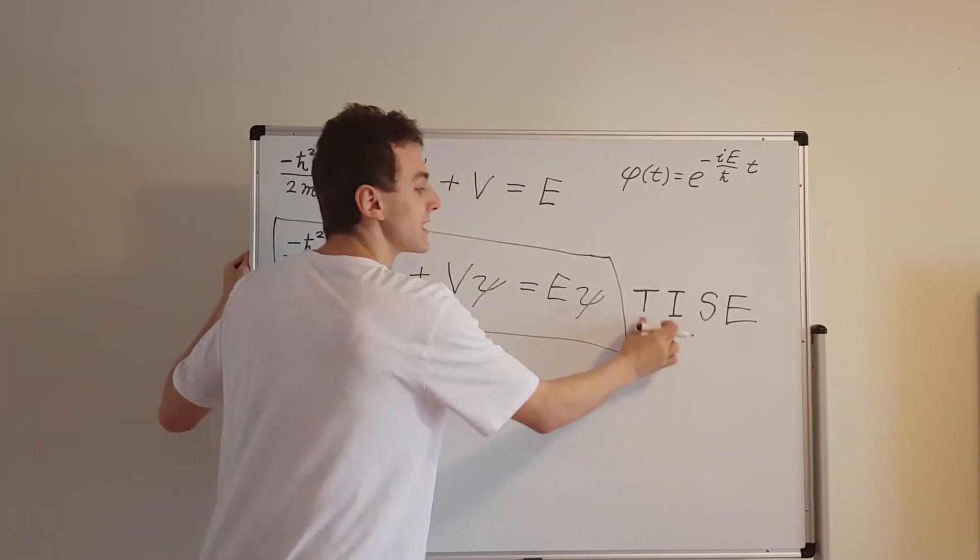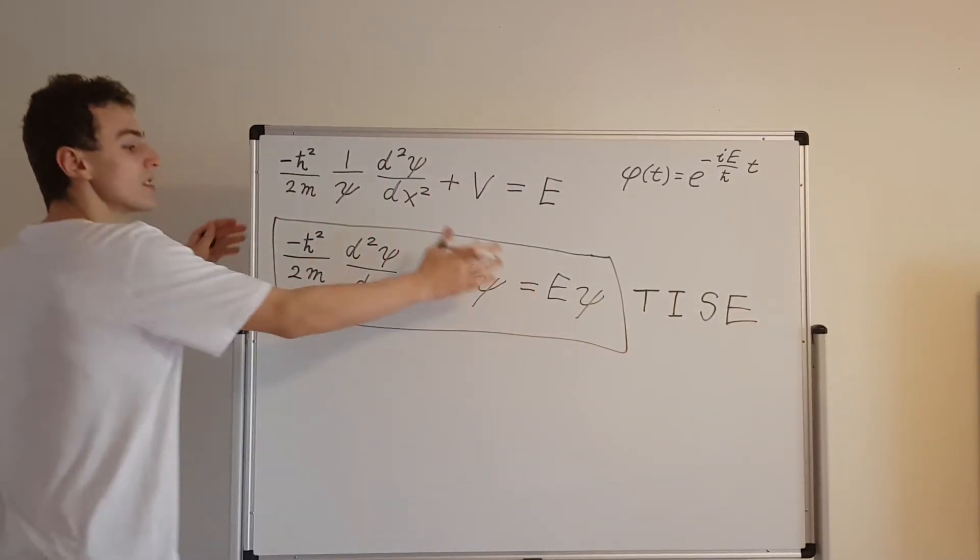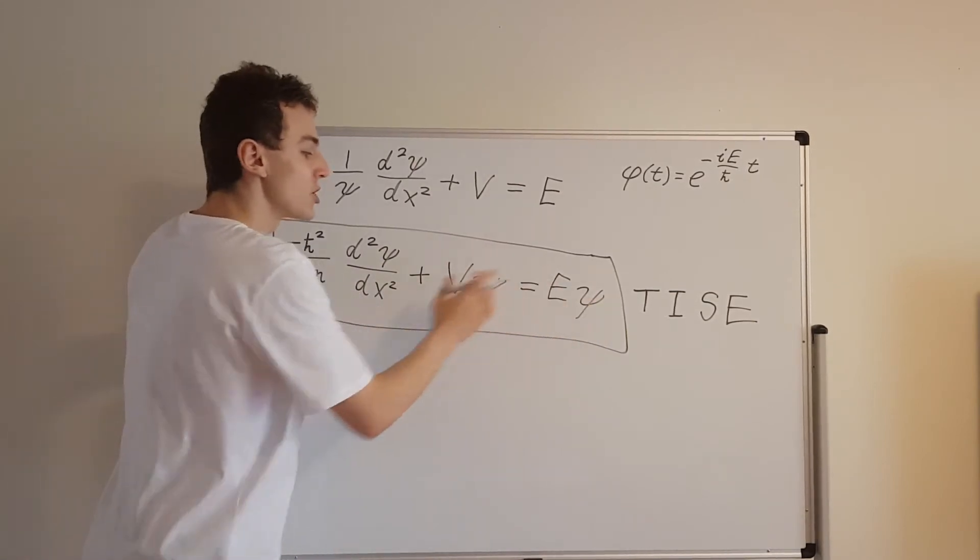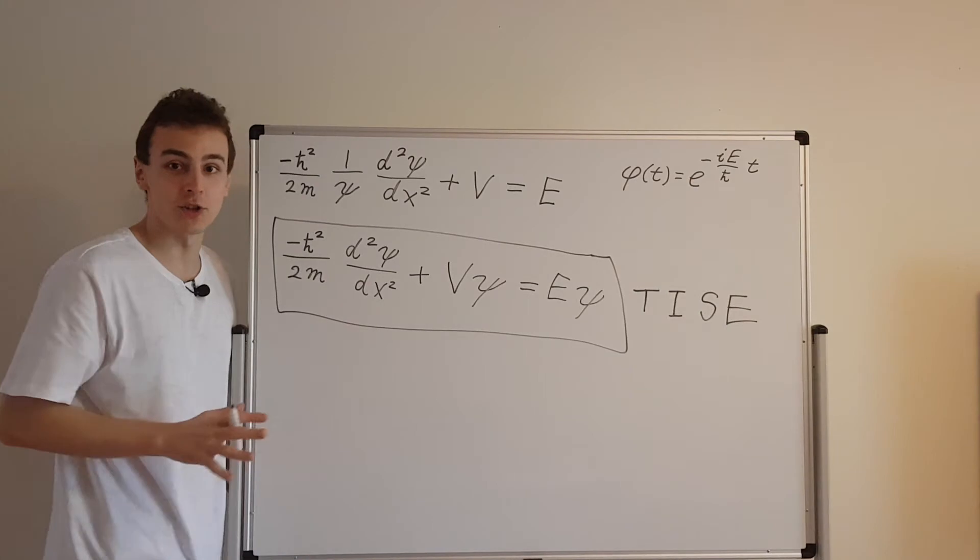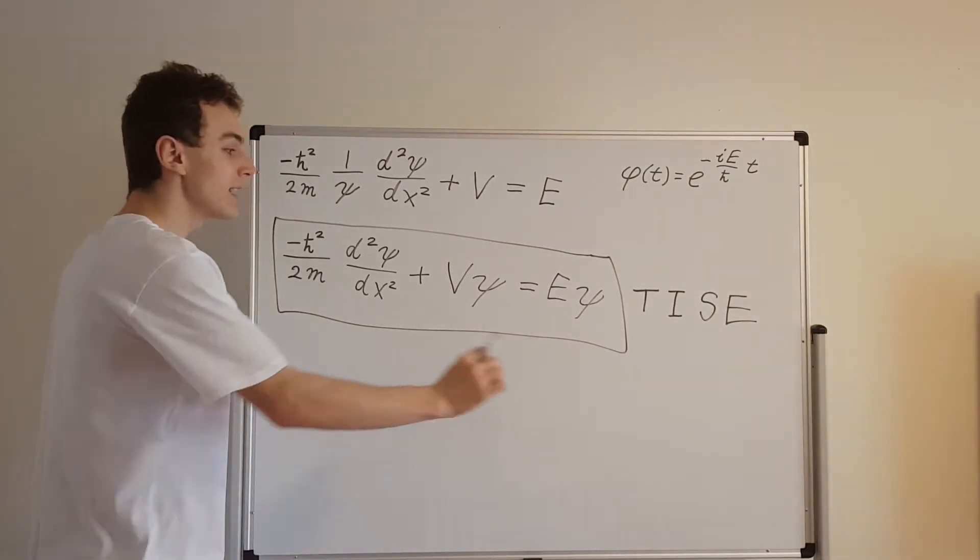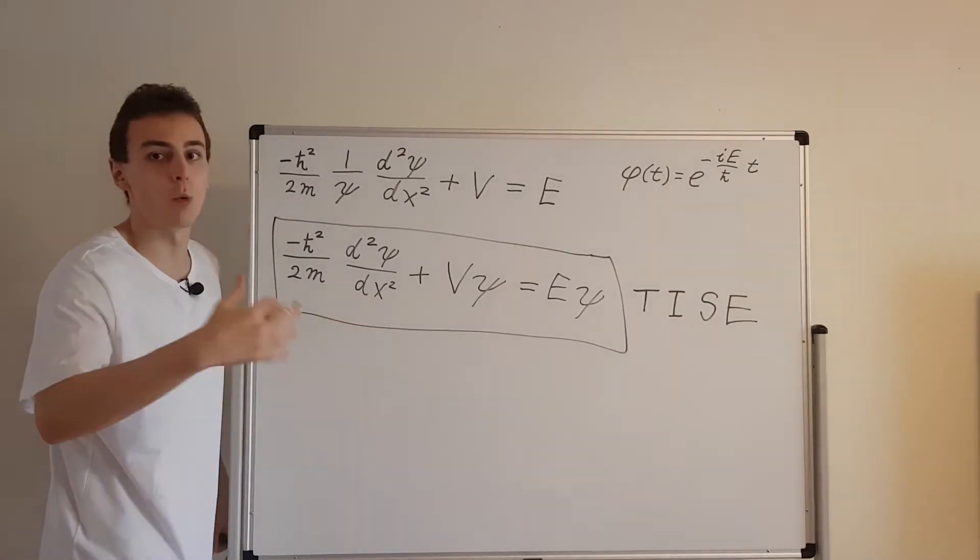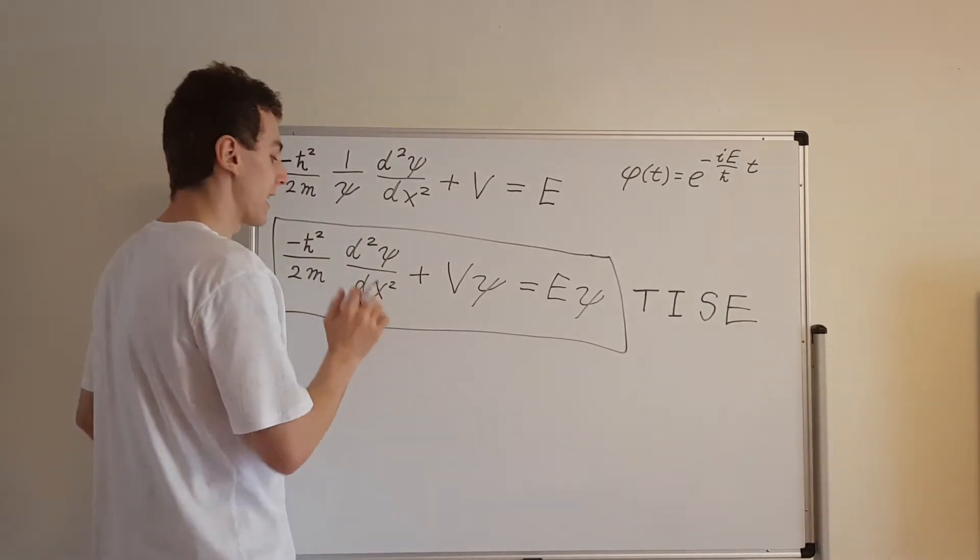So it's the Schrödinger equation, but it's time independent. Time doesn't show up anywhere over here. Everything just depends on x. And keep in mind, this is a one dimensional equation. We're just dealing with 1D motion. So that's why there's only x, there's no y or z. We're only dealing with the x coordinate.